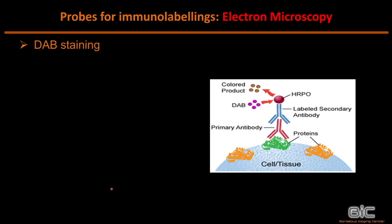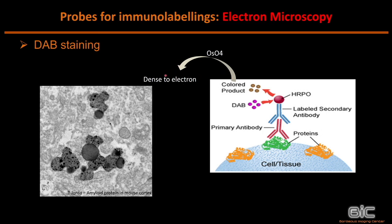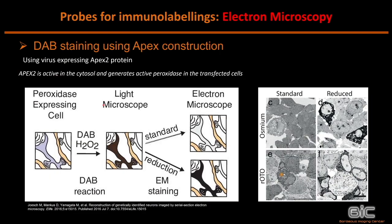We can also use DAB staining in EM, same as for optical microscopy: the DAB reacts with HRP coupled to a secondary antibody. The product, colored brown in optical microscopy, can be made electron-dense by the addition of osmium. This DAB reaction can also be used with APEX constructs — APEX is expressed using a virus, generates peroxidase in the cytosol, and with a DAB reaction produces dark areas that can be seen first in optical microscopy and then in EM. This is something increasingly used.